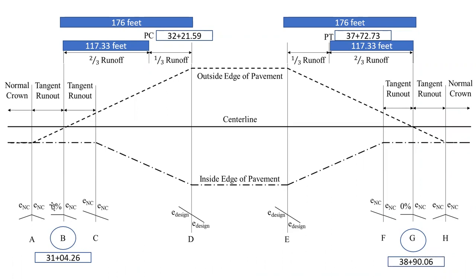So again, adverse crown removed is when we have we're still at our normal crown slope on our inside, we're flat on the outside lanes. That's points B and G, adverse crown removed 31 plus 04.26 and 38 plus 90.06. So for any given simple curve, the adverse crown removed happens both before and after the curve as we're transitioning into superelevation and out of superelevation. Those are our two points in the answer to this question for this particular curve.